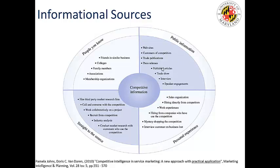Public information is simply information that's publicly accessible. In our strategic planning meetings, since we're a big system, all of our planners from different entities come together and talk about what's in the news with our competitors — and we glean that from public information. Personal experience means drawing on people's experiences with the competitor. You can also go straight to the source or hire a third-party market research firm to conduct some of these analyses. These are ethical, safe methods of obtaining information.